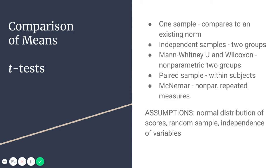For comparison of means, you use t-tests, and there are several different kinds. The one-sample t-test compares one group to an existing norm — for example, comparing MMPI scores of pastors to an existing normed sample. Independent samples t-tests are used when you have two groups to compare. The Mann-Whitney-U and Wilcoxon tests are nonparametric tests with two groups that allow you to compare differences between groups based on rankings.